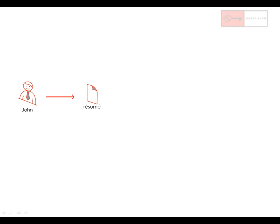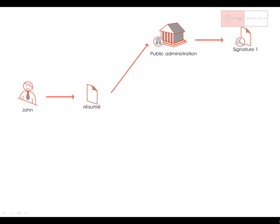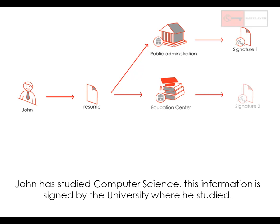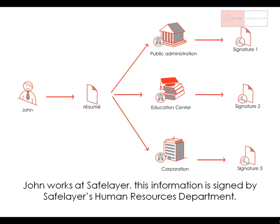For instance, John's resume contains his complete name, his ID number and his address, and this information can be endorsed by a public administration that has this information on its records, and therefore can state that the information is true with its signature. Another section of John's resume is education. John's attendance at high school or universities can be certified by these educational institutions, who will sign the bits of information related to John's education. In fact, this piece of signed information would have the same value as the physical diploma given to John by the university when he graduated. And that applies also to the organizations where John has worked, whose human resources department can confirm that John worked for them as well as the tasks he used to perform.